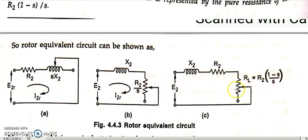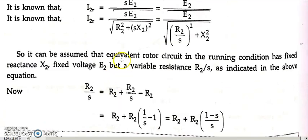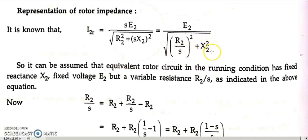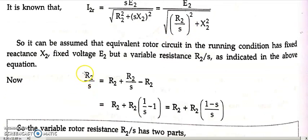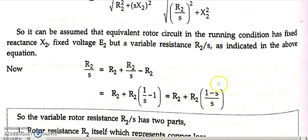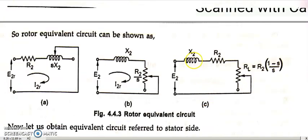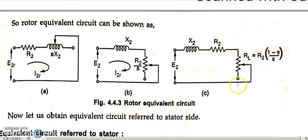Coming to the third form of the rotor equivalent circuit: X2 is in series with R2/S, and we shall not touch X2. But R2/S can be resolved into R2 plus R2 into bracket (1 minus S)/S, as we discussed. So in the existing circuit, X2 is present, and R2/S is resolved into two parts: R2 plus RL, where RL equals R2 into bracket (1 minus S)/S. All three forms are electrically equivalent.